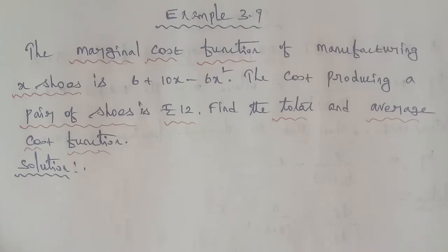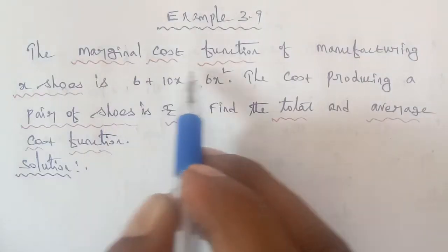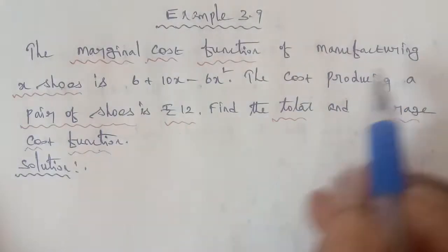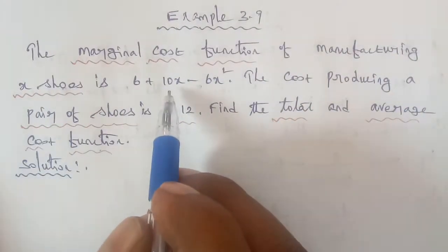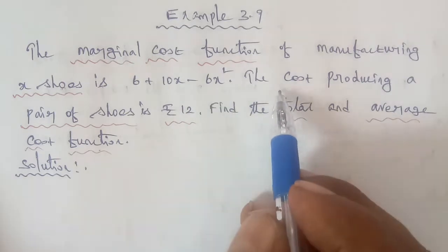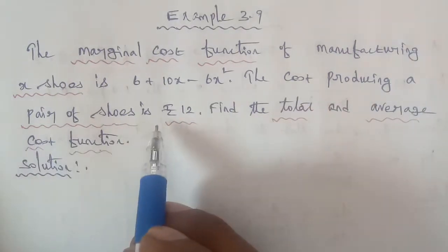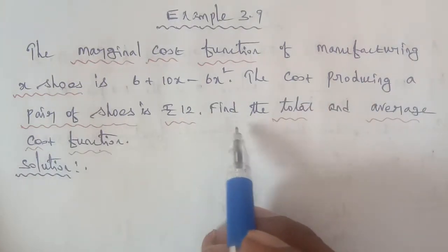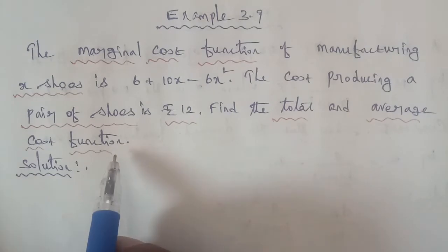Hi students, I am Gopinath. 12th Business Maths, Example 3.9: the marginal cost function of manufacturing X shoes is 6 plus 10X minus 6X square. The cost of producing a pair of shoes is rupees 12. Find the total and average cost function.